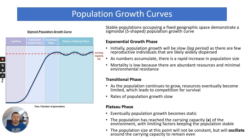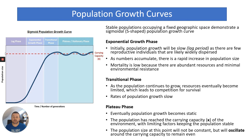In terms of looking at population, we need to understand how populations grow and then become stable. Stable populations occupying a fixed geographic space demonstrate what we call a sigmoidal or S-shaped population growth curve. The first phase is lag phase, where initially you get a few reproductive individuals that are widely dispersed, then they start to produce offspring and numbers accumulate, leading to a rapid exponential growth phase.